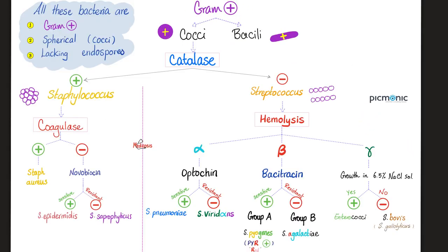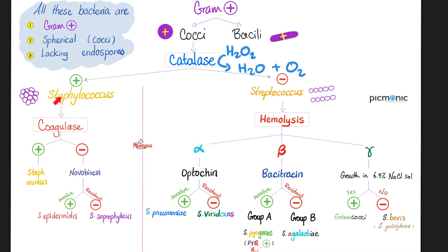If you're a gram positive organism, are you a coccus or a bacillus? I am a coccus. Then, are you catalase positive or catalase negative? I do possess the enzyme catalase — I can convert H2O2 into oxygen and water. I am catalase positive. Congratulations, you are a Staphylococcus. Then, are you coagulase positive or coagulase negative? I do have coagulase — congratulations, you are Staphylococcus aureus. I do not have coagulase.